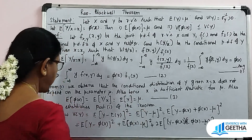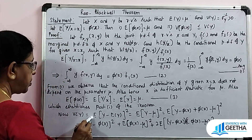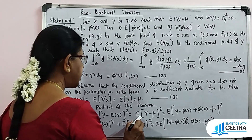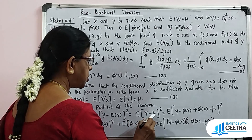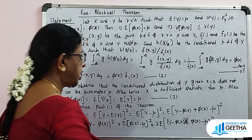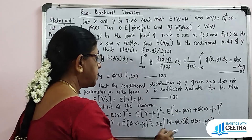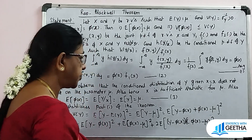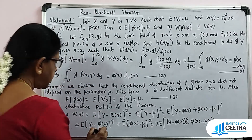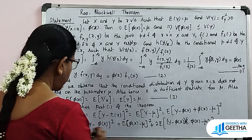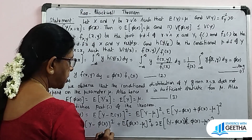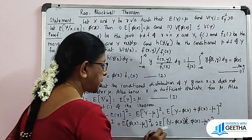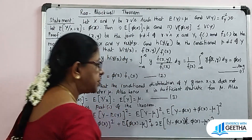For part 2, Var(Y) = E[(Y − μ)²]. Adding and subtracting π(X), we get E[(Y − π(X) + π(X) − μ)²]. Expanding using (a + b)² gives E[(Y − π(X))²] + E[(π(X) − μ)²] + 2·E[(Y − π(X))(π(X) − μ)]. This is equation 4.